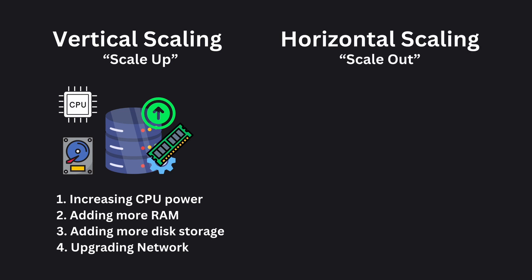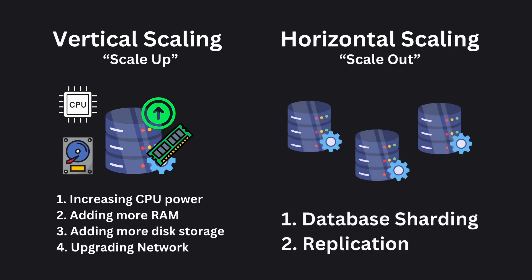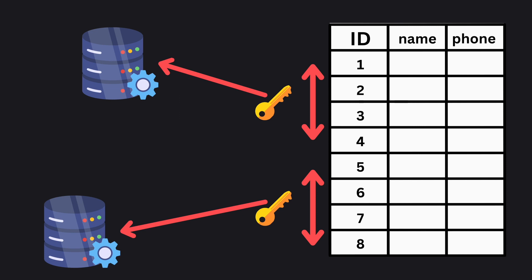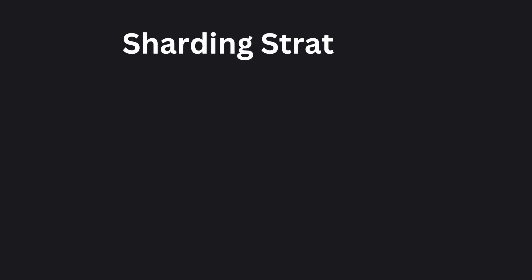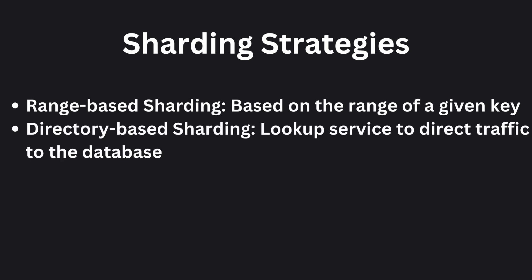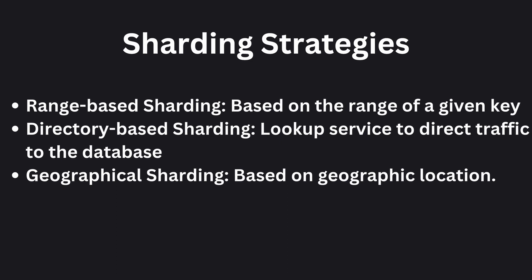The next option is horizontal scaling, or scale out, which involves adding more machines to the existing pool of resources rather than upgrading a single unit. Databases that support horizontal scaling distribute data across a cluster of machines. This could involve database sharding or data replication. Database sharding is distributing different portions — shards — of the dataset across multiple servers. Sharding strategies include range-based sharding, where you distribute data based on the range of a given key; directory-based sharding, which uses a lookup service to direct traffic to the correct database; and geographical sharding, which splits databases based on geographical locations.